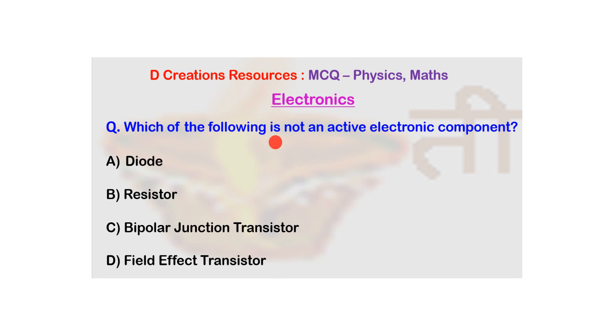The question is, which of the following is not an active electronic component? And the options are diode, resistor, bipolar junction transistor and field effect transistor.